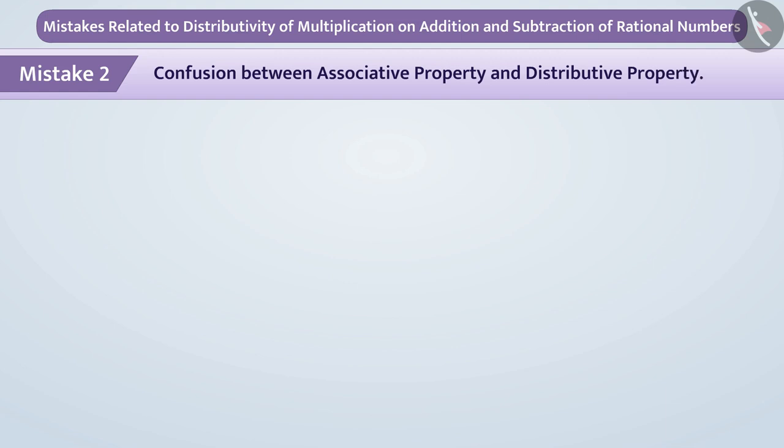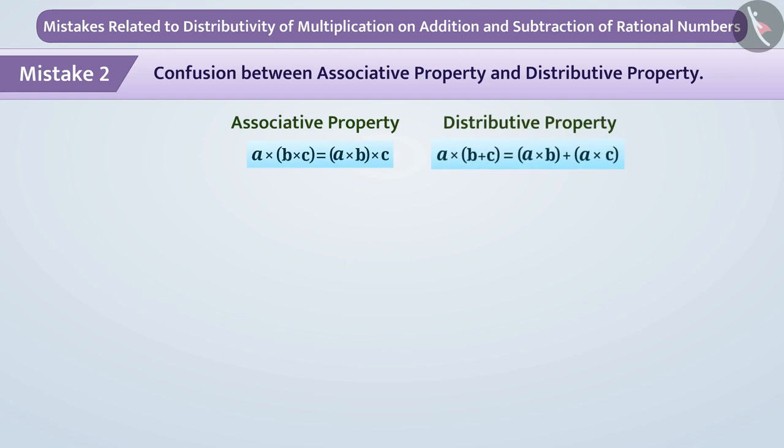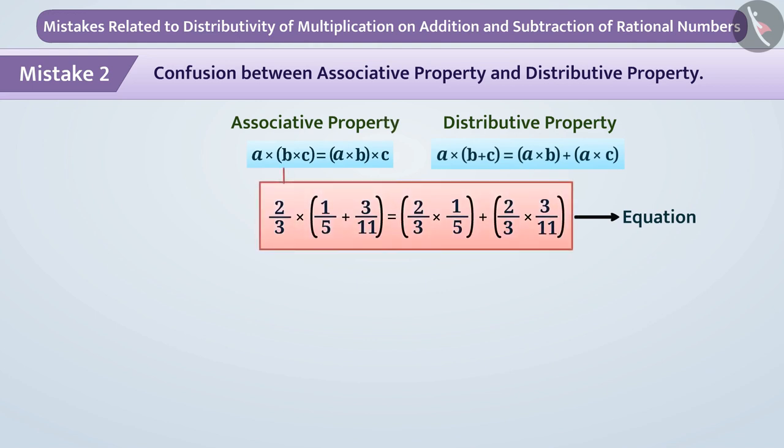Some children have confusion between associative property and distributive property because both properties are related to the use of parenthesis. If they are asked which property is used in this equation, then looking at the parenthesis they tell that the associative property is used in this equation. It is necessary to understand that the addition is distributive over multiplication here.